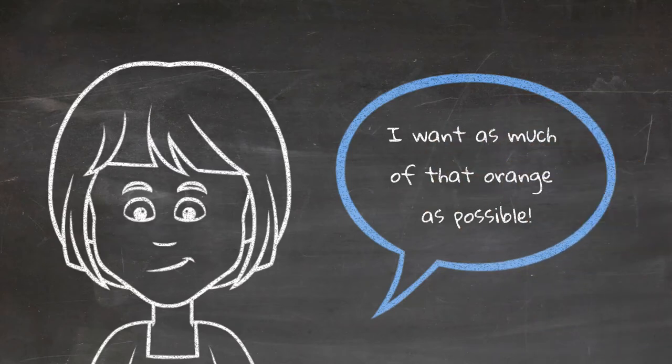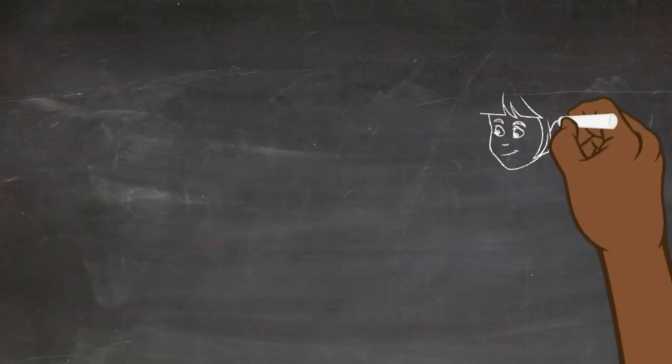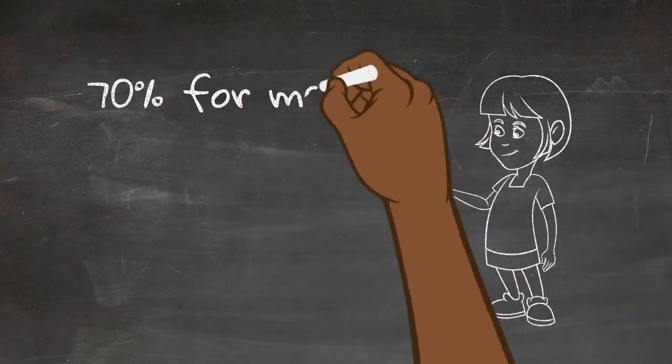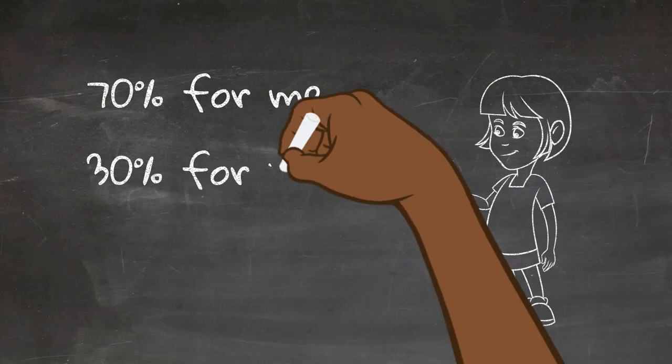So you start off by saying to the negotiation partner, look, I've been hanging out for a glass of orange juice for months. I'll take 70% of this orange and pay 70% of the price.